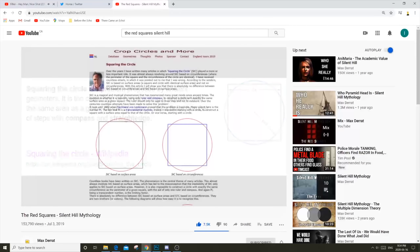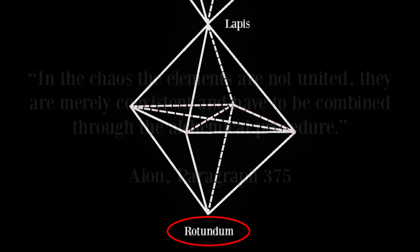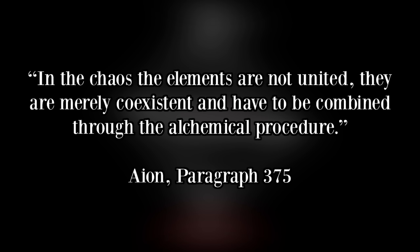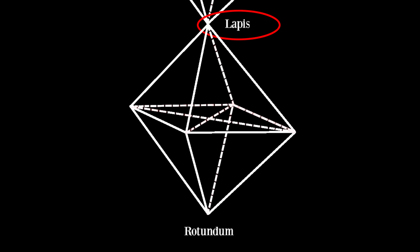The next step involves a unification of these four elements into one seed. Though the four elements co-existed inside the rotundum, they were not united — they were merely co-existent and had to be combined through the alchemical procedure. These four elements are united in the lapis.